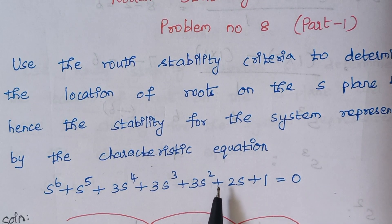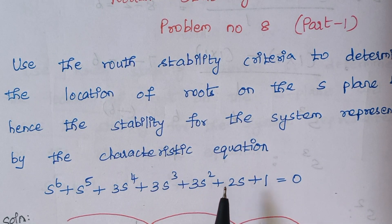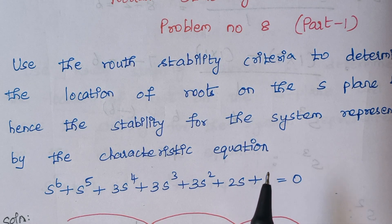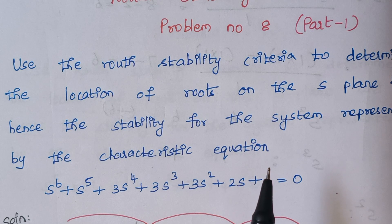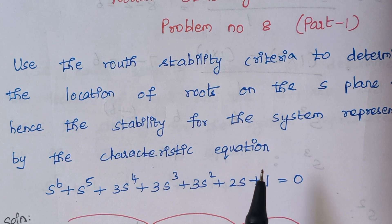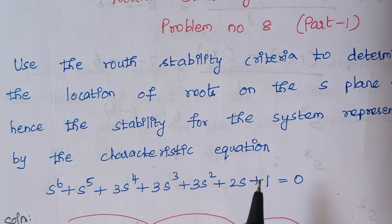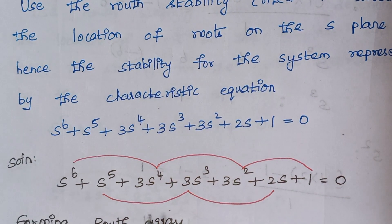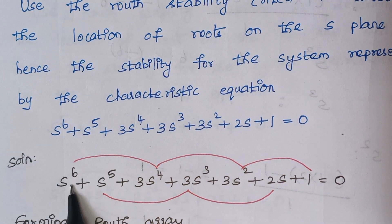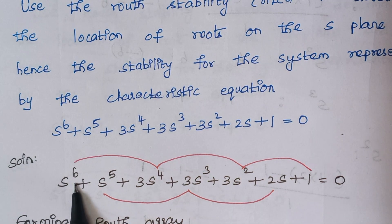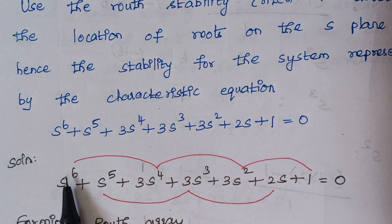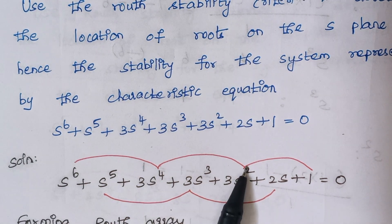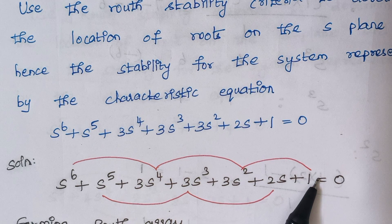We are asked to find whether the system is stable or not, and also to find the location of roots — either on the right half or left half of the s-plane. The maximum power of the characteristic equation is 6, which is an even number, so we have to group all the even power terms together: s^6, s^4, s^2, and s^0.